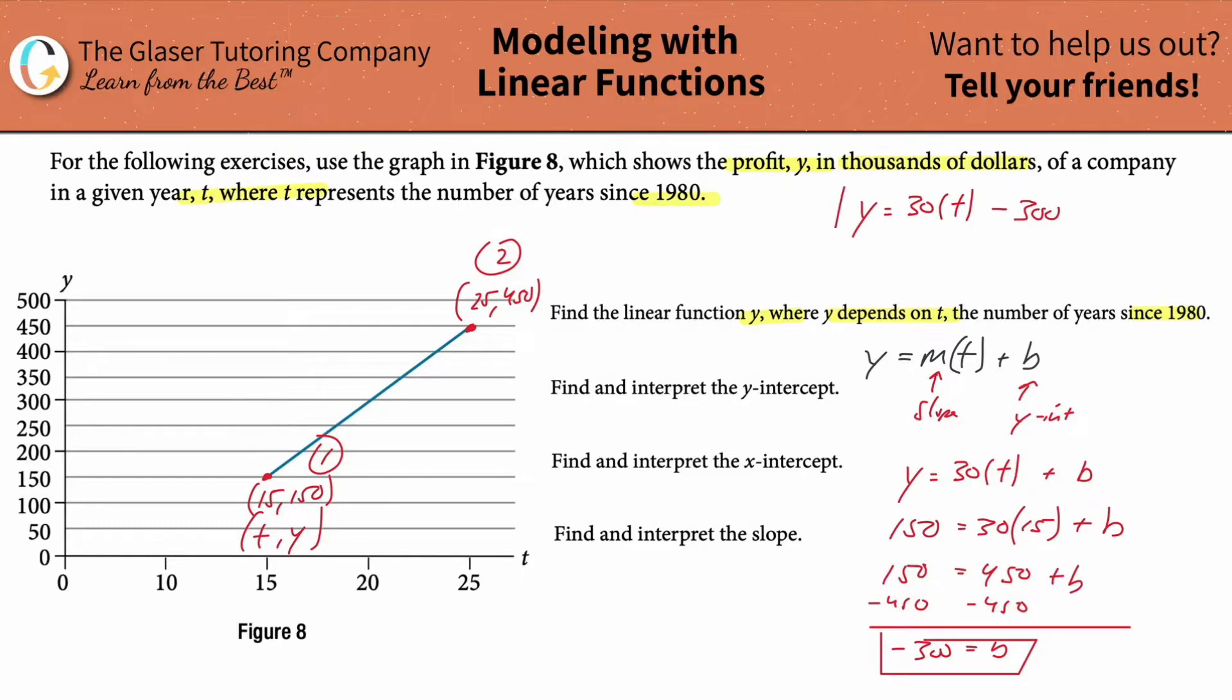So this now represents the linear equation or the linear model. And hopefully that makes sense if you were to take this line and extend it all the way on down. This would be roughly about negative 300.